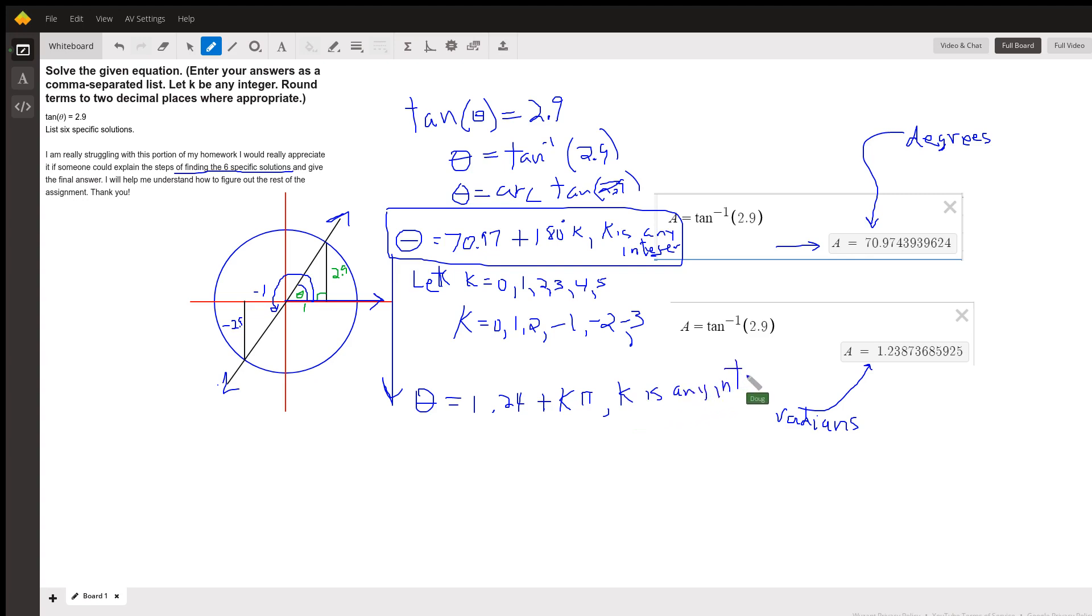And then if you wanted to get six specific solutions, again, you would let k be 0, 1, 2, 3, 4, 5. But you can list as many solutions as you want. There you go, hope that helped. If you have any questions, post a comment.